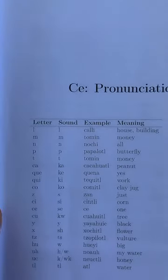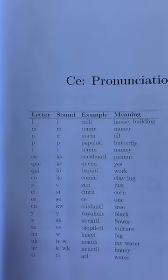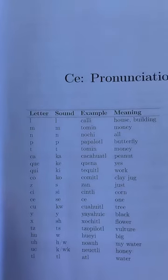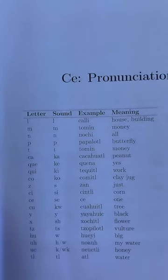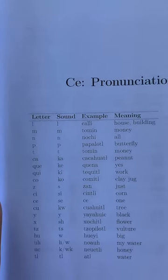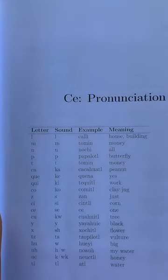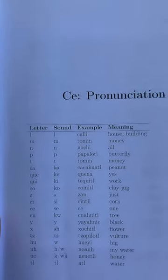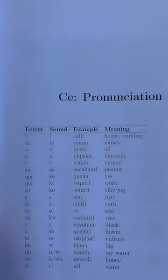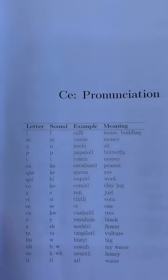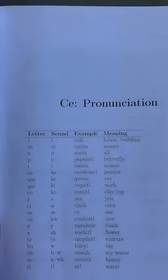Let's do the words again: 'Cali' — house. 'Tomin' — money. 'Nochi' — 'Ika Nochi Noyolo' — with all my heart. 'Papalot' — butterfly. 'Wey papalot' — grand, great butterfly that I love and respect deeply. 'Cacahuat' — peanut, also used for cacao. 'Kena' or 'kema' — yes. 'Amo' — no.